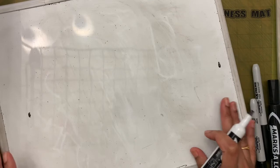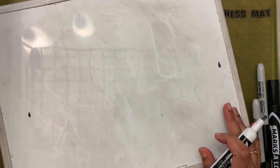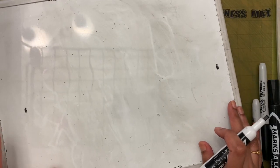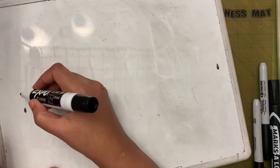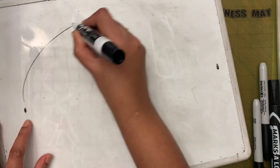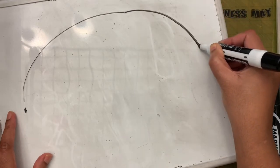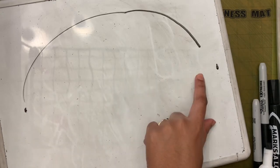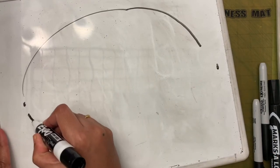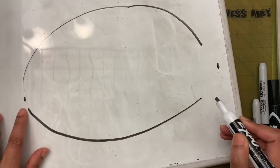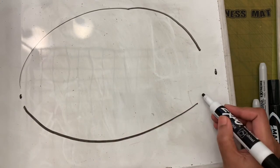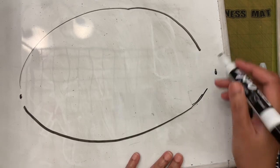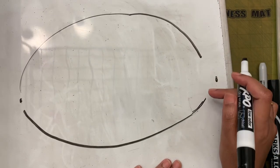Now we are going to draw a rainbow. Start just above the dot and go almost all the way to the other dot - not touching the dot. Then make a smile shape starting just below the other dot, going almost to the first dot.